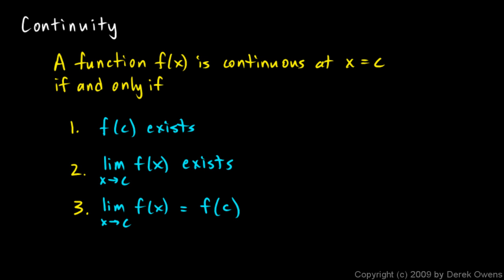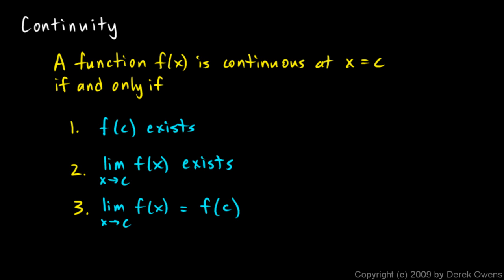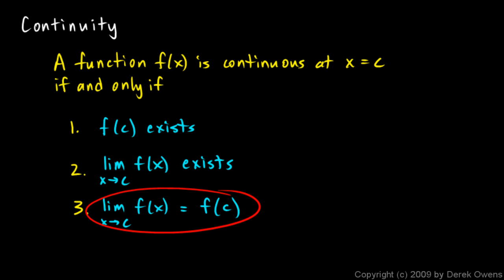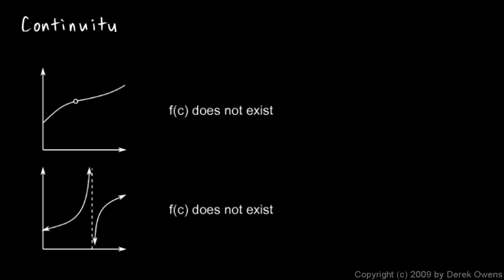And this is how you often hear it put — the limit equals the value. Because stating it that way, if you're talking about the limit of the function and the value of the function, you're assuming that both exist. So a lot of times continuity is summed up just with this one statement: the limit of a function equals the value of the function. Now let's look at some pictures that illustrate these specific cases.